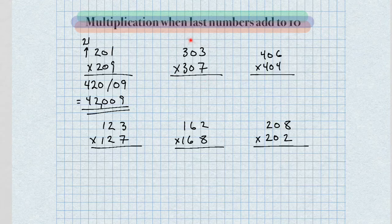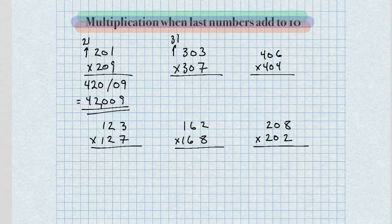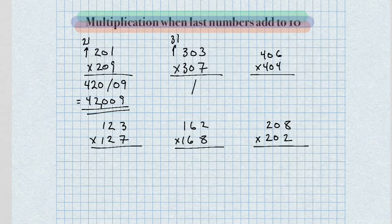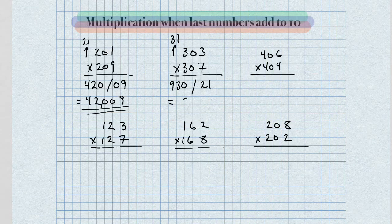The next problem, 303 times 307. We're going to multiply by the next number up from 30, which is 31. So for our left-hand side we get 930, and for the right-hand side we get 21 for our answer.